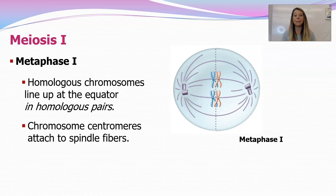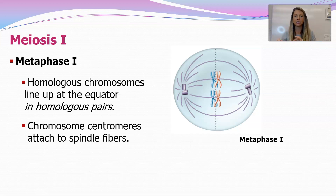Then we have metaphase I. Just like in metaphase of mitosis, the chromosomes line up. But remember, they were just paired up and crossing over in prophase I, so in metaphase I they line up in their homologous pairs — not single file like in mitosis metaphase. The chromosome centromere is attached to the spindle fibers, but the big difference is that they are lined up side by side, not single file.